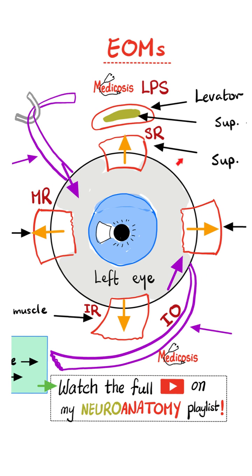The oculomotor nerve is going to enter the orbit via the superior orbital fissure, and then will supply the levator palpebrae superioris muscle, the superior rectus muscle, the inferior rectus muscle, the medial rectus muscle, and the inferior oblique muscle.